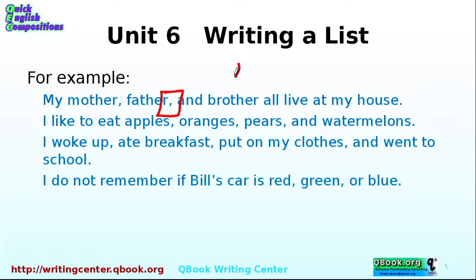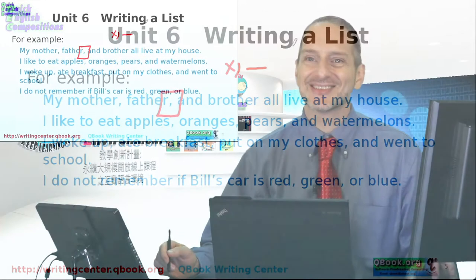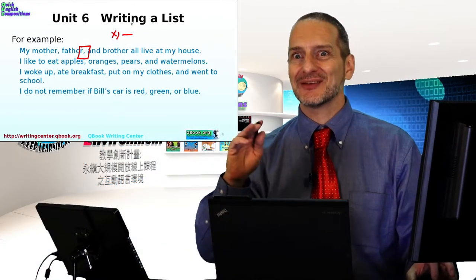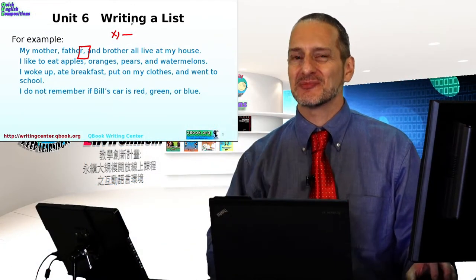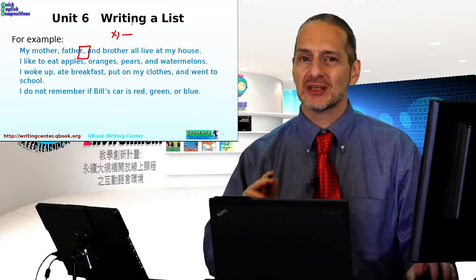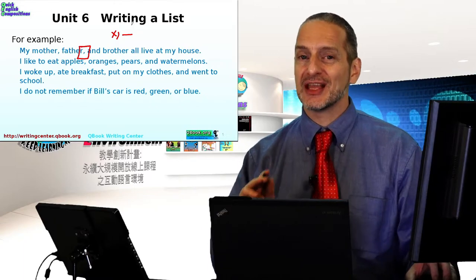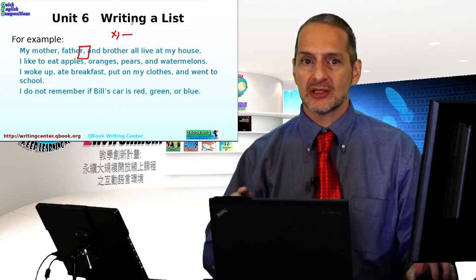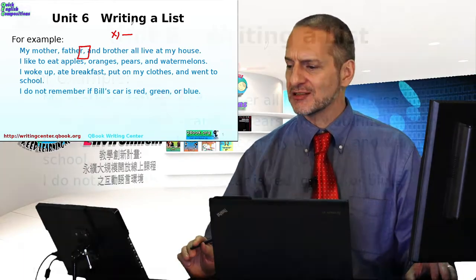Remember — I'm always saying this: before the comma, no space; after the comma, one space. It's so easy to get confused, especially for non-native English speakers, so please pay attention to that.